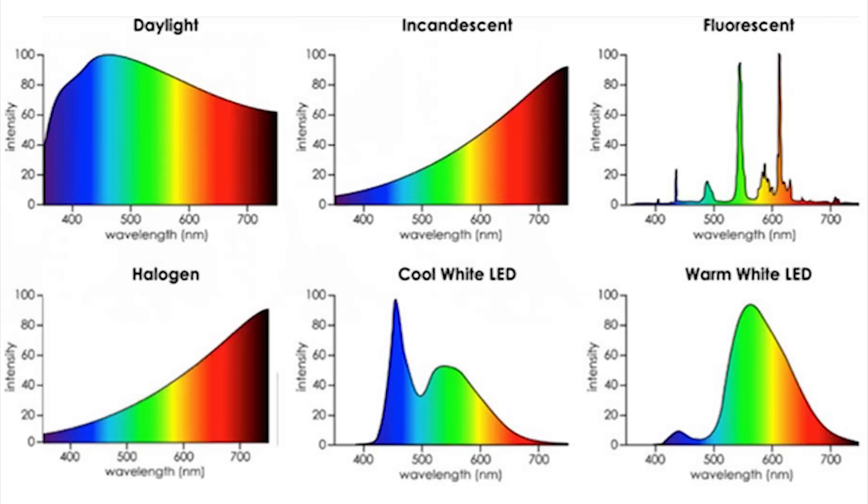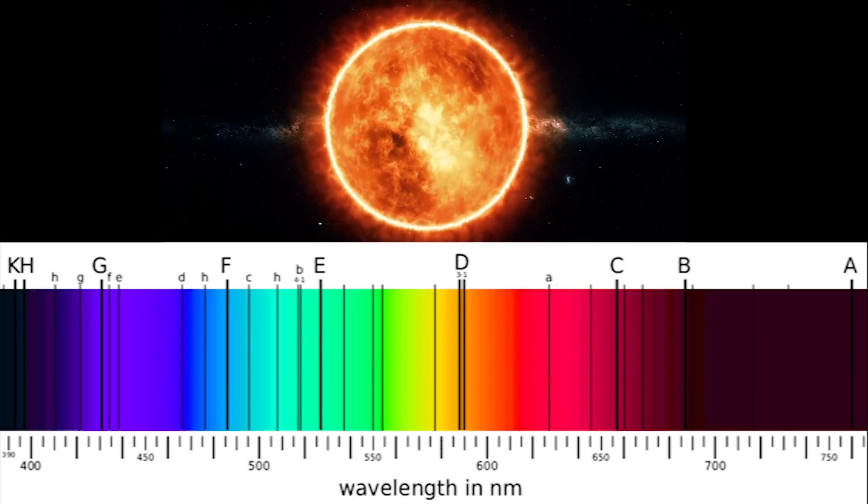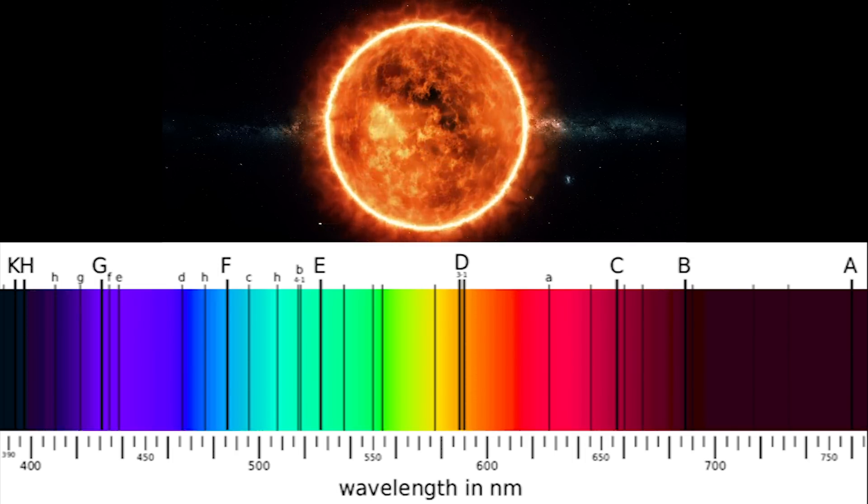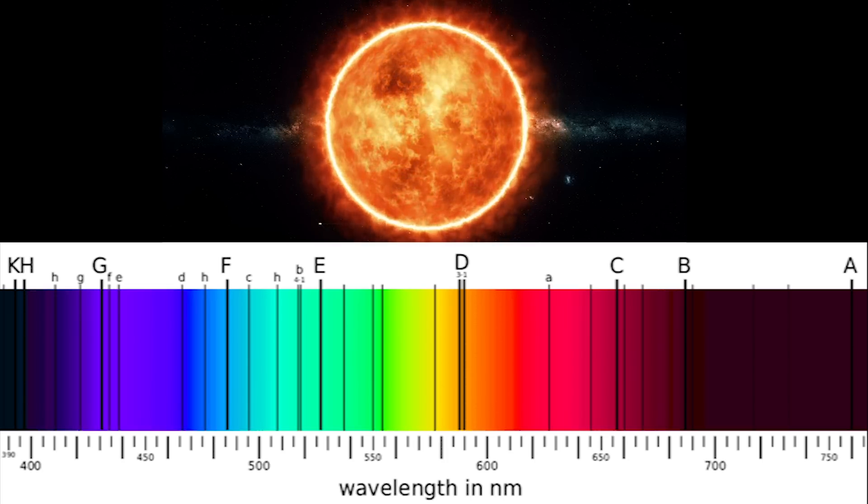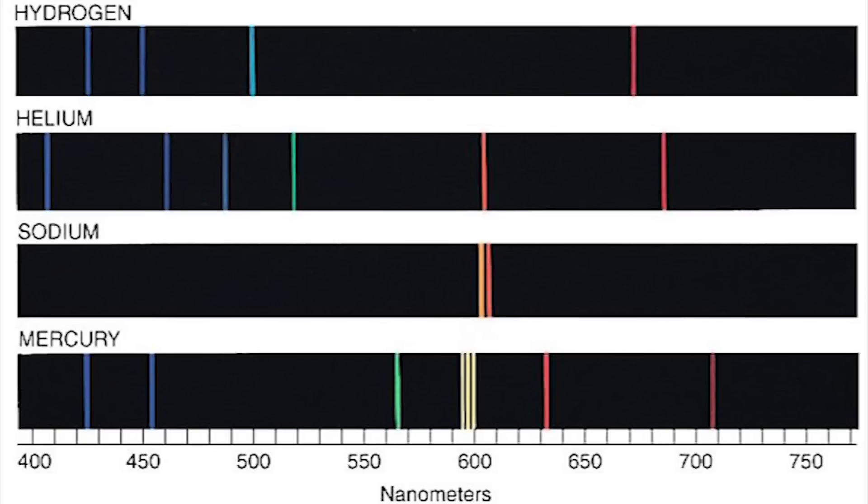However, when we do this, we suddenly see all sorts of other details if we look closely. For the solar spectrum, there's these thin lines of color missing. These correspond to specific elements in the sun that absorb those specific wavelengths. We figured out which is which by taking individual elements, putting them in a special tube, and then putting enough electricity through them that they start to emit light. We then measure that light with a spectrometer and see what lines show up.